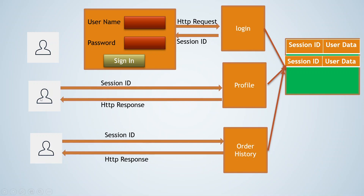The server provides that session ID to the client. Whenever the client wants user-specific data like profile or order history, it sends that session ID back to the server. The server picks up that session ID from the request, checks the cache storage, and if found, serves the user-specific response. If not found, it sends an error or session expired message, redirecting the user to the sign-in form. This is how authorization works based on session ID in traditional web applications.